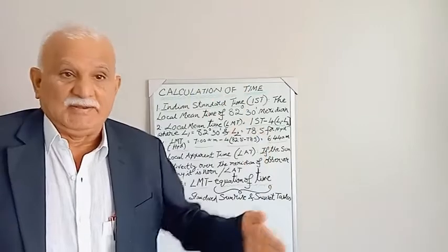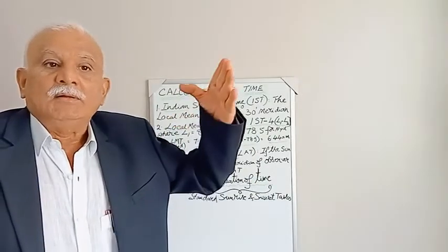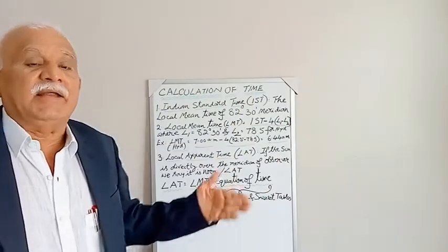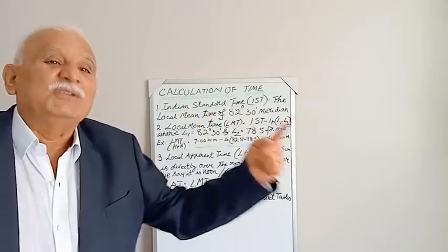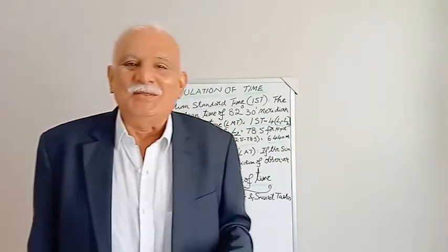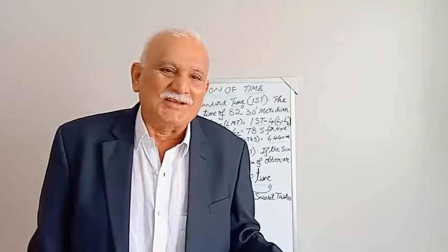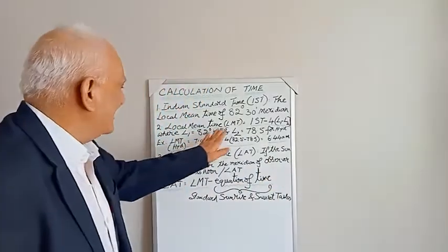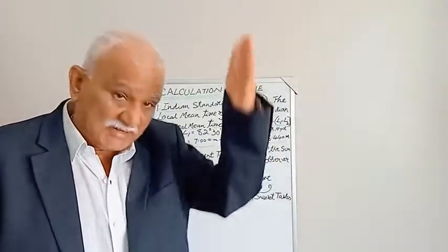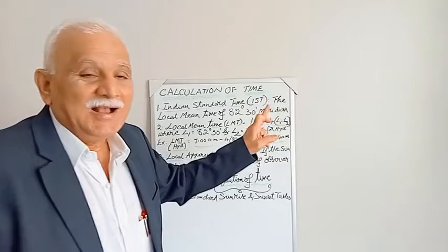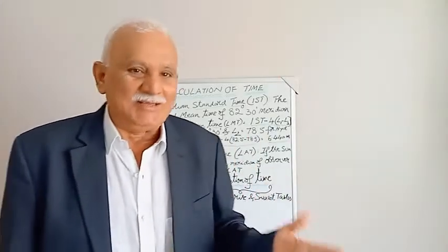In summary, it takes 16 more minutes for the sun's rays to fall on the Indian Standard Meridian at 82.5° compared to Hyderabad. To recap: Local Mean Time equals IST minus 4 times (L1 minus L2). If a location is to the west of the Indian Standard Meridian, you should add the correction: LMT = IST + 4 × (L1 − L2). Thank you for your patience.